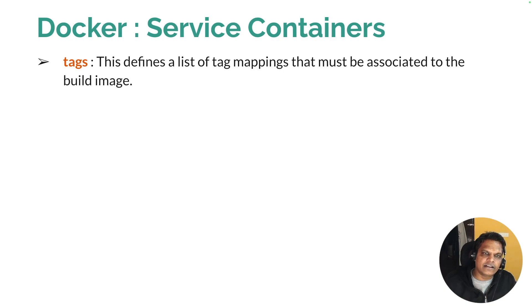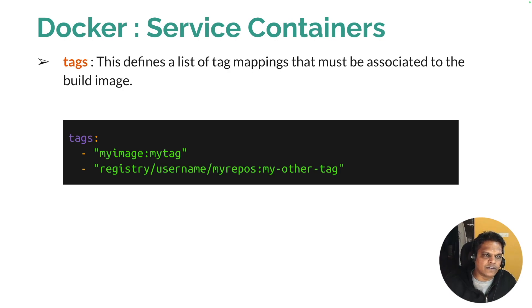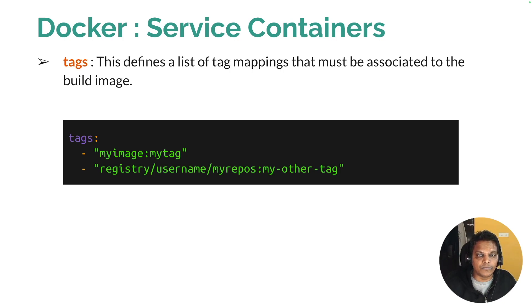The last property is tags. Tags define a list of tag mappings that must be associated with the built image. Whatever tags you want to associate with your built image, you can define them within the tags section and the image will be tagged accordingly. These are the key syntax properties you need when building images with Docker Compose. It may seem confusing now, but in the coming lecture we will execute a lab and create Docker images using a docker-compose YAML file, which will clear all confusion.